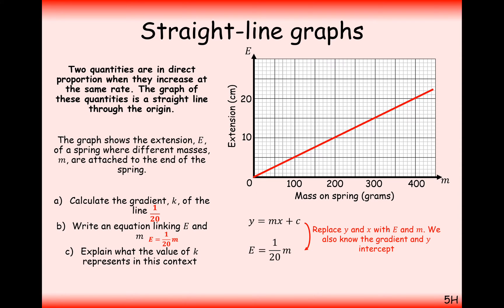So, really, I know that its y-intercept is 0, so c is 0. So, here, in this case here, just replacing the letters E and M with x and y, we get E equals 1 over 20m. Now, M here is not the gradient, M is just the mass on the spring.